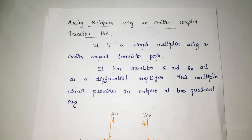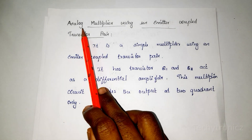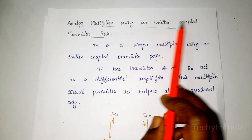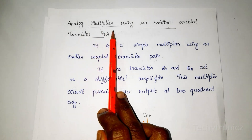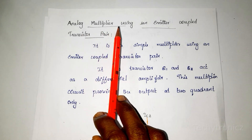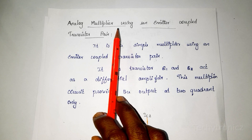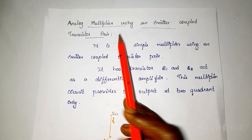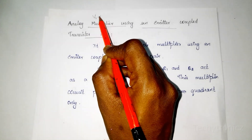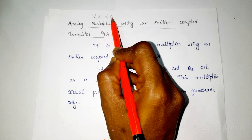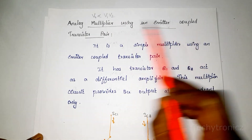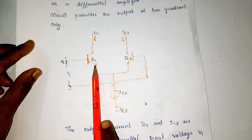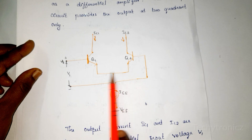In this video we are going to learn about analog multiplier using an emitter coupled transistor pair. Analog multiplier means the output voltage is directly proportional to the product of two input voltages. We are using an emitter coupled transistor pair, which means the emitters are coupled together.